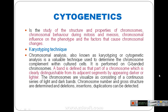Karyo means nucleus — as in eukaryotic — so when we analyze chromosomes, that is called karyotyping or cytogenetic analysis. This is a very valuable technique because through it we are able to understand and identify genetic disorders like Down syndrome and others.